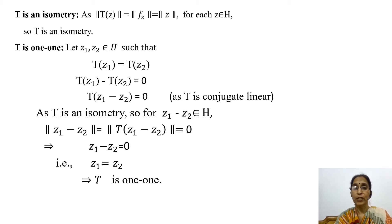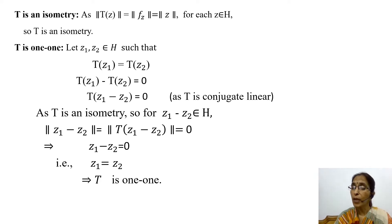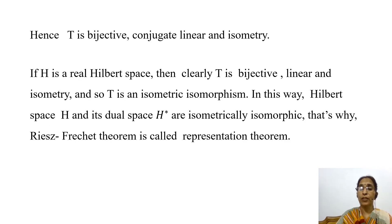Now we show that T is one-to-one. Let Z1 and Z2 be in H such that T of Z1 equals T of Z2. This implies T of Z1 minus T of Z2 equals zero, and since T is conjugate linear, T of (Z1 minus Z2) equals zero. As T is an isometry and Z1 minus Z2 belongs to H, the norm of (Z1 minus Z2) equals the norm of T(Z1 minus Z2), which equals zero. Therefore Z1 minus Z2 equals zero, so Z1 equals Z2. Hence T is one-to-one.